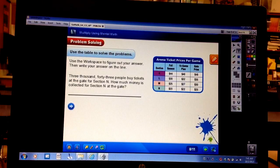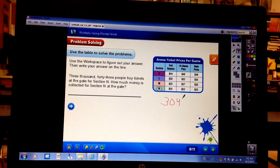Okay. So, now here's problem solving. Use the table to solve the problems. Use the workspace, which you guys have over here on your page, to figure out the answer. Then, write the answer on the line. 3,043 people buy tickets at the gate for Section N. Okay. Right here. Section N. How much money is collected for Section N at the gate? Well, 3,043 people. So, you've got to write out 3,043. Alright. So, if I write out 3,043, right? How many people buy tickets? Or how much money is collected? I'm sorry.